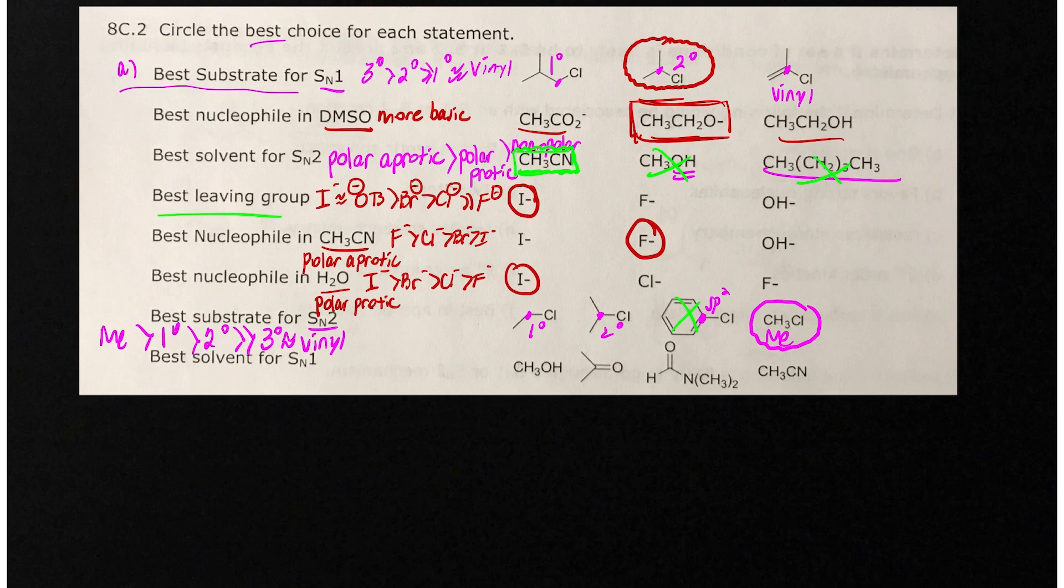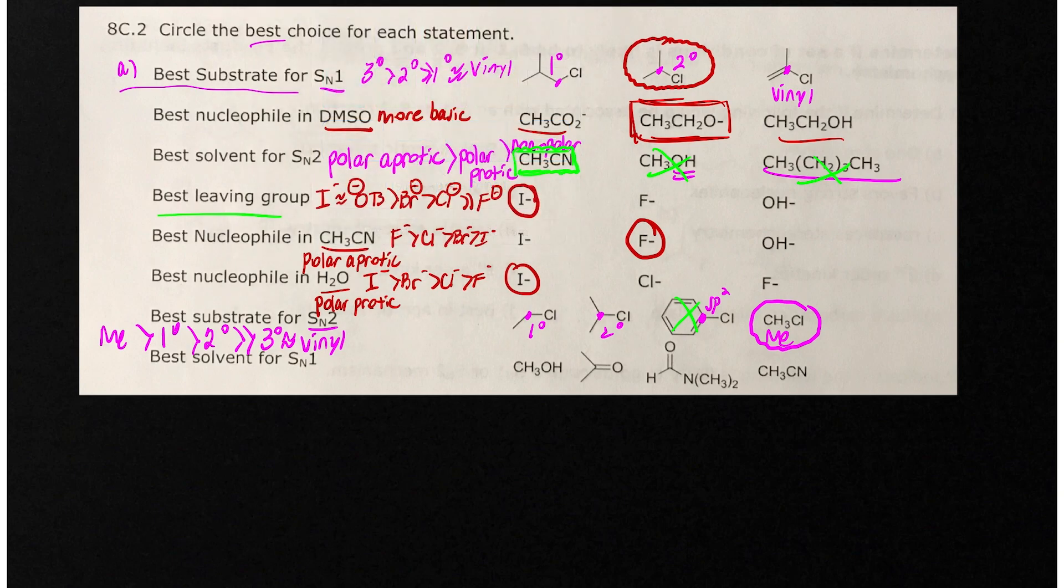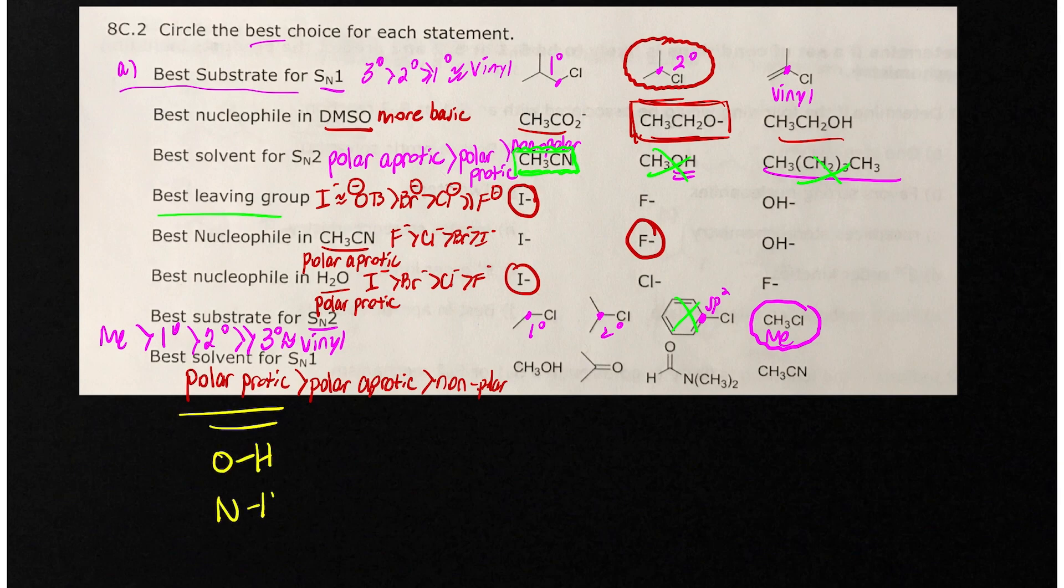For SN1, your solvents are going to be polar protic, is better than polar aprotic, which is going to be better than non-polar. We don't have any non-polar things here. So again, remember that polar protic have OH bonds or NH bonds in the Lewis structure.